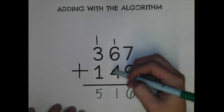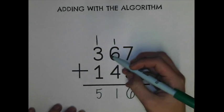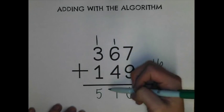So three hundred sixty seven plus one hundred forty nine equals five hundred sixteen.